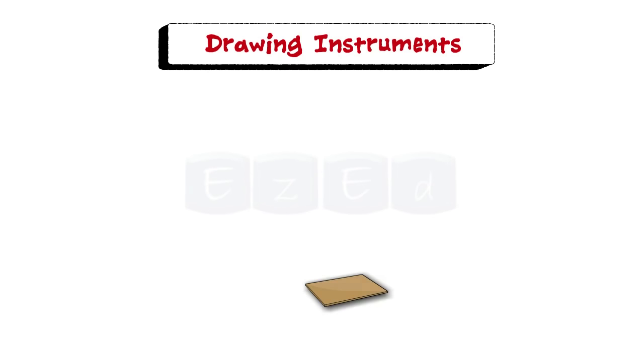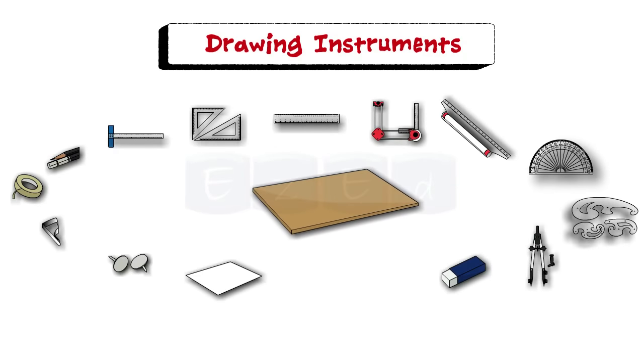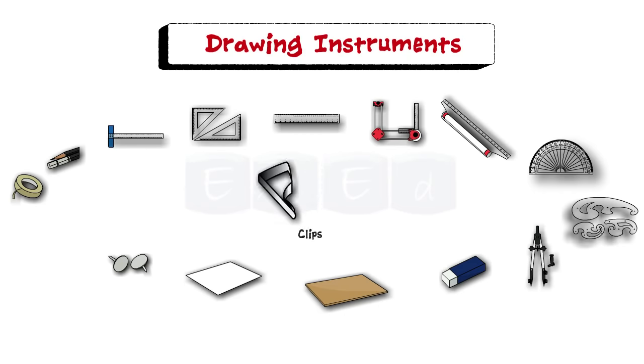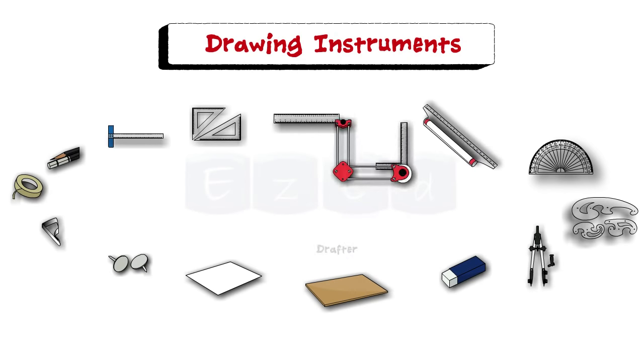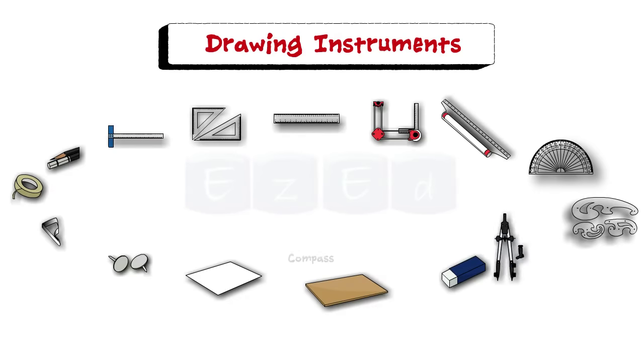Let us see different drawing instruments used in engineering drawing. In this we have a drawing board, drawing paper, pins, clips or adhesive tapes, pencils, t-square, set square, scale, drafter, roller scale, protractor, French curves, compass, and eraser.